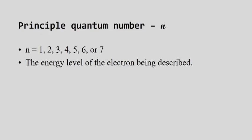The first is called the principal quantum number, given the letter N — which should reflect back on energy levels, one through seven. So the principal quantum number can be one through seven. It just tells you the energy level of that particular electron.